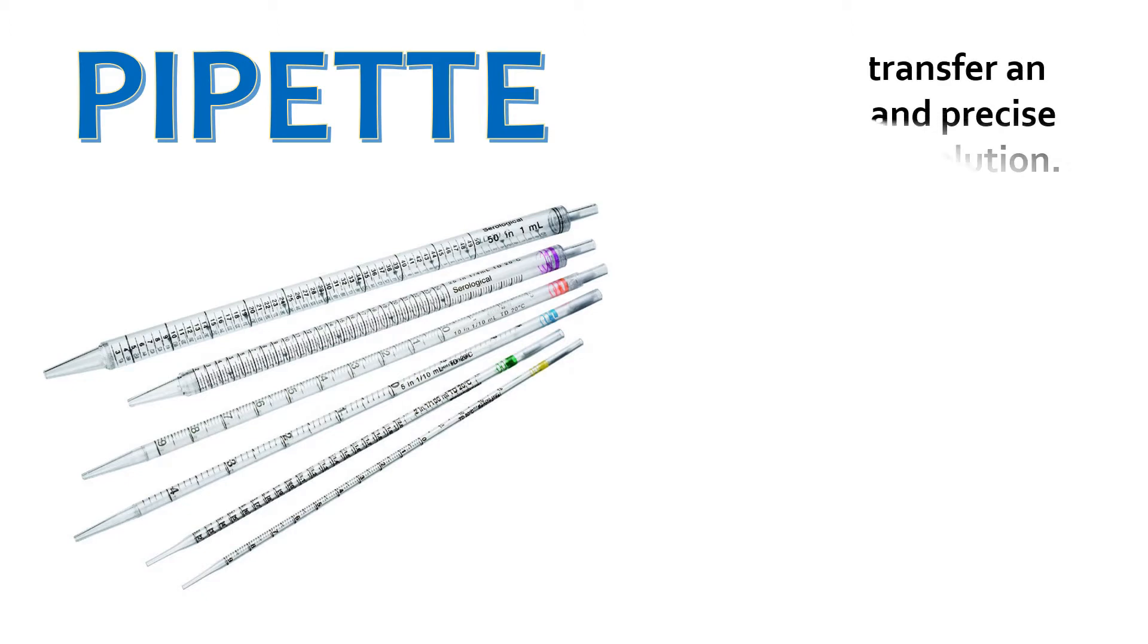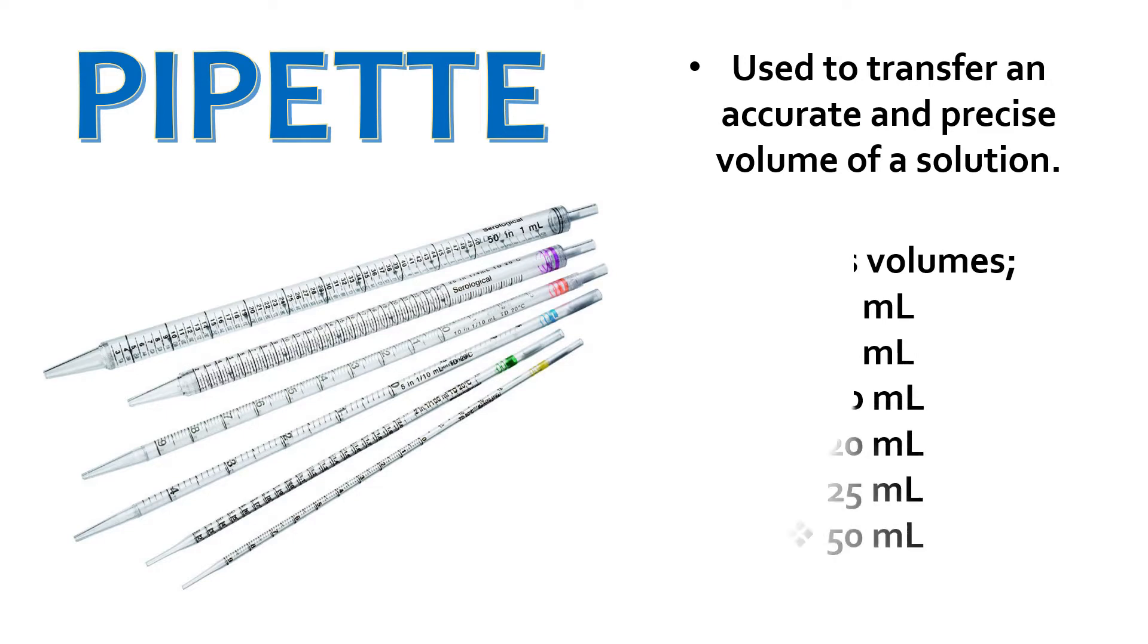Pipettes are used to transfer an accurate and precise volume of a solution. Pipettes come in various volumes: 1 ml, 5 ml, 10 ml, 20 ml, 25 ml, and 50 ml.